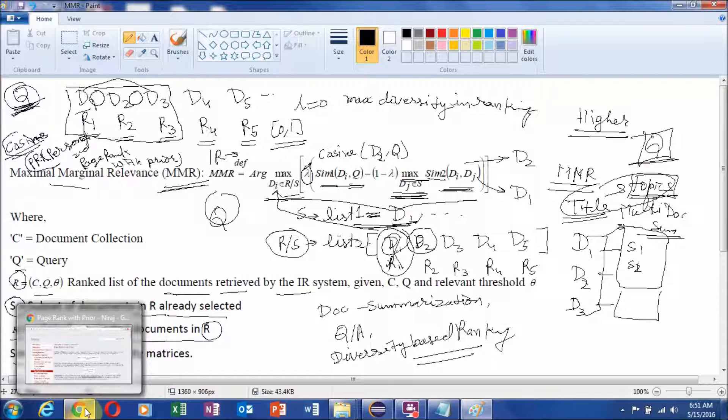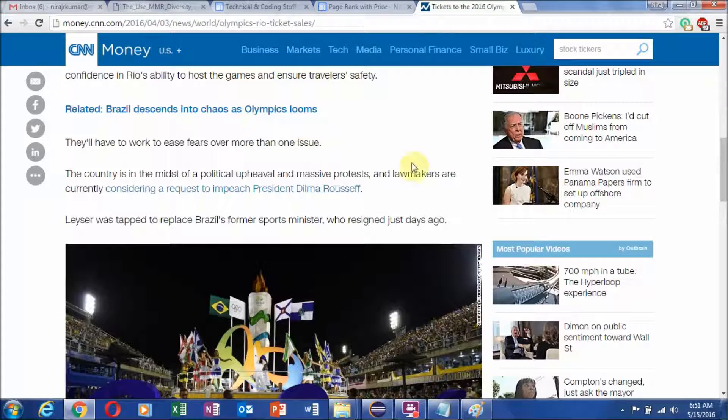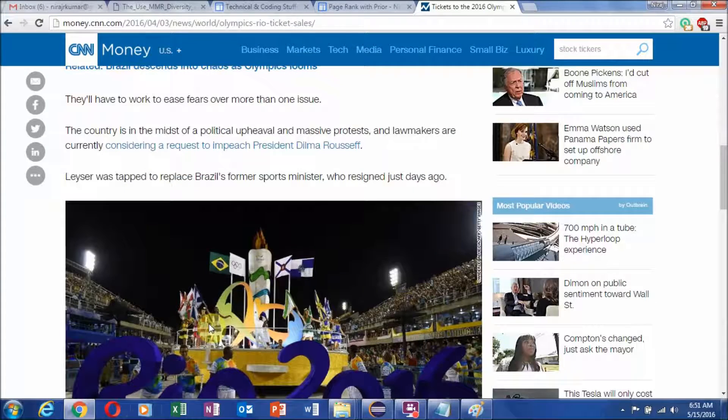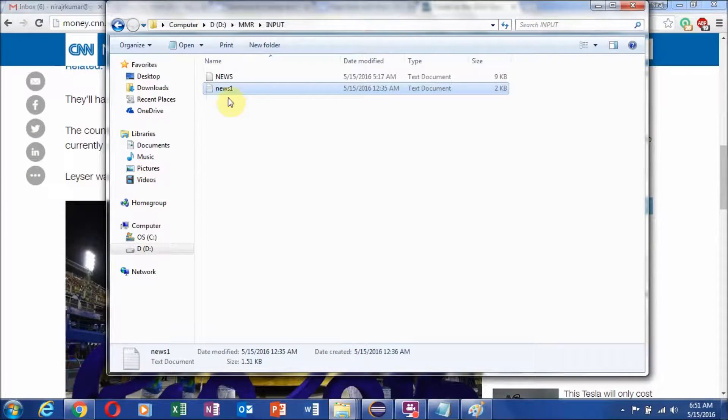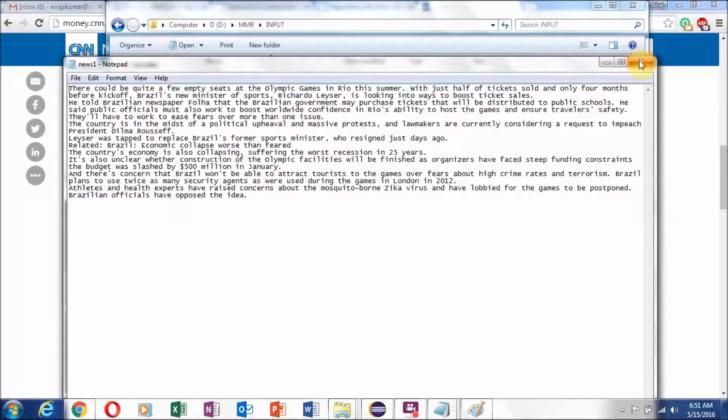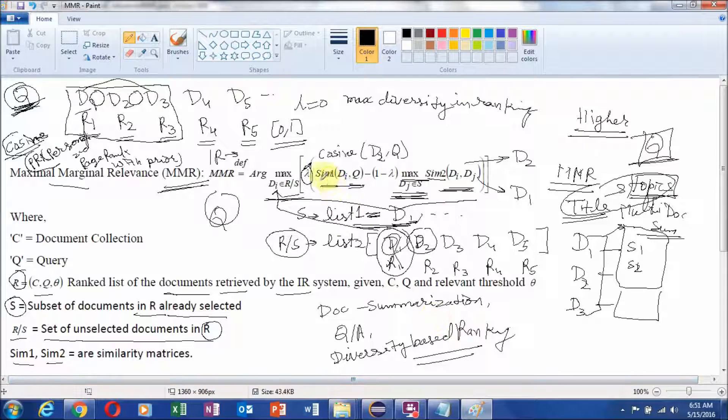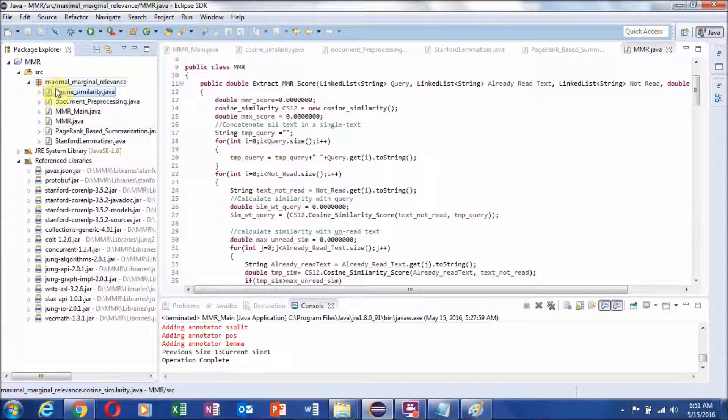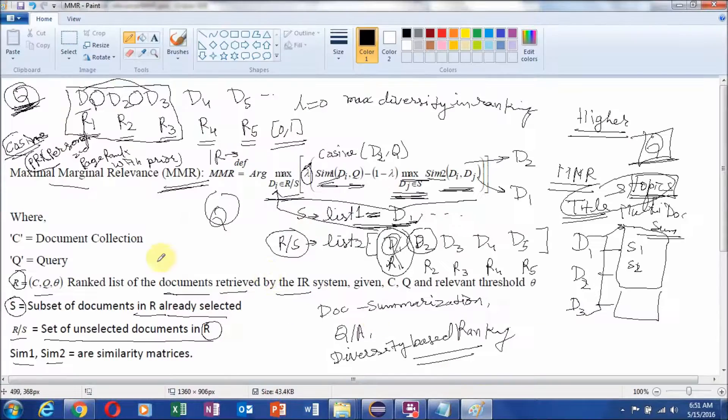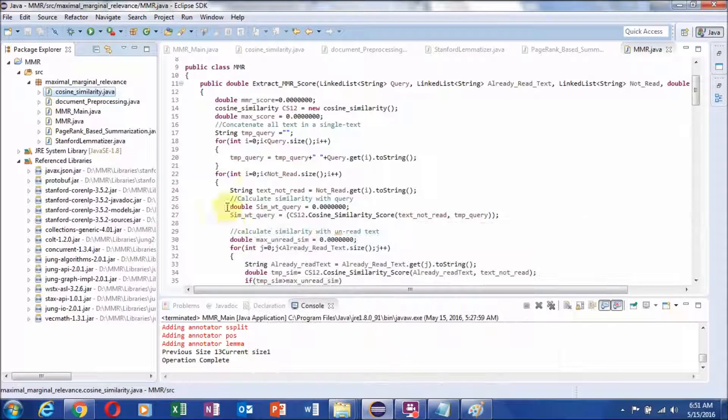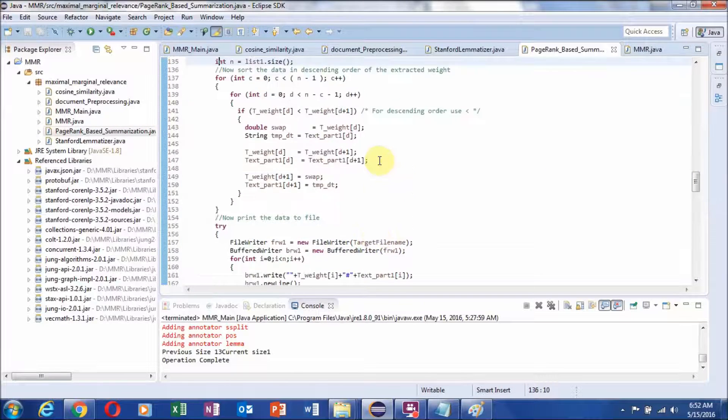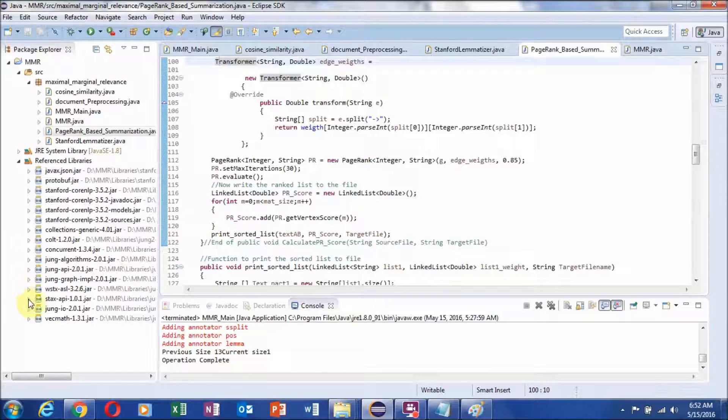Before going to the demonstration we will first explain a simple example. We copied this news to our input file. These are the copied news and after that we used a Java program. Here, in the case of similarity, we used the cosine similarity value and in case of ranking, we used PageRank based technique. For our implementations we used Java Universal Network Graph library for entire implementation and Stanford CoreNLP package for all document preprocessing tasks.